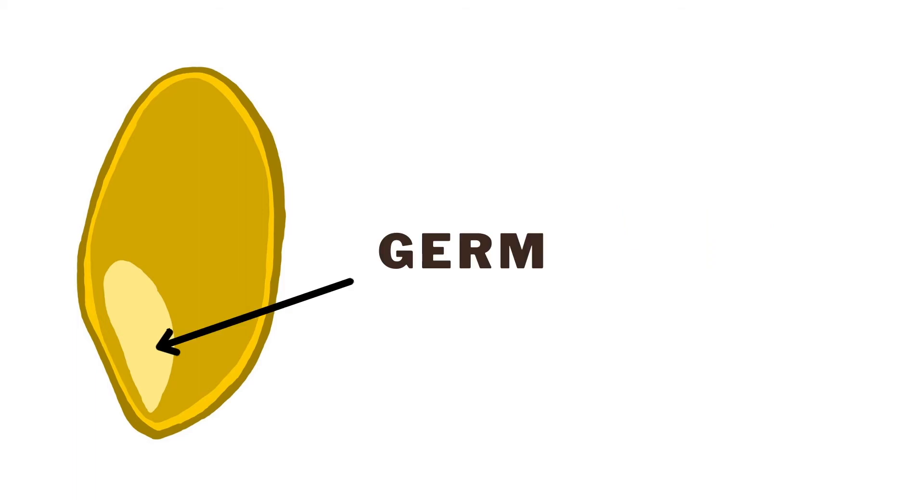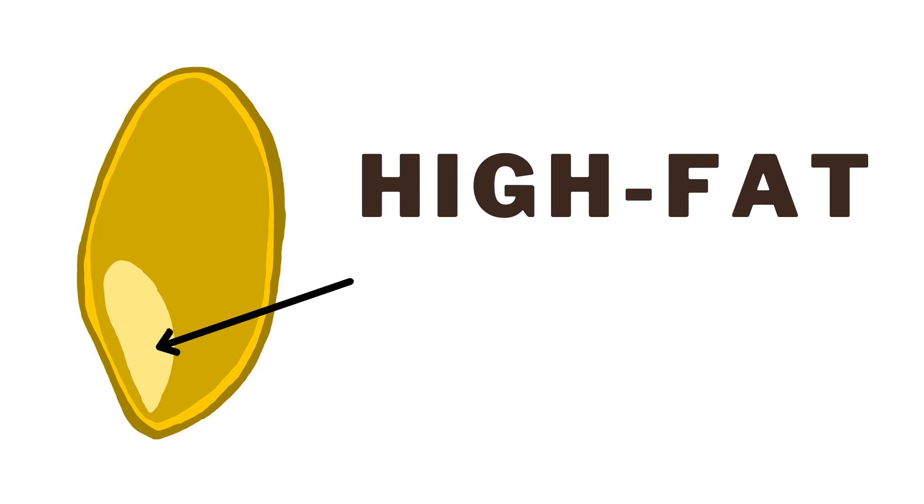Finally, the germ is the smallest part and represents around 3% of the kernel weight. The germ is a high fat, sprouting part of the seed.